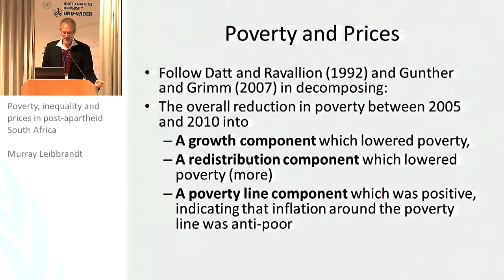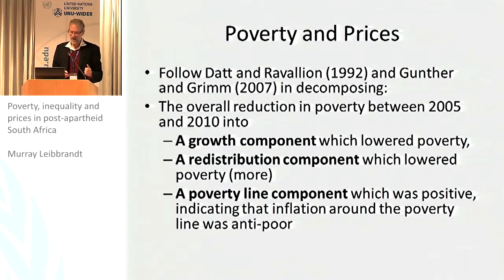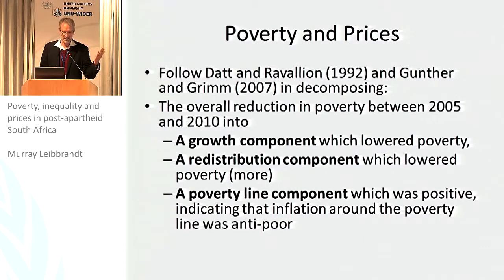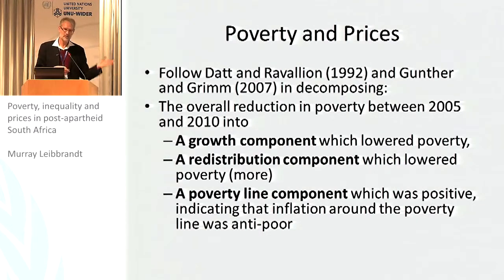We follow a cluster of papers. The Datt-Ravallion decomposition of poverty into growth and redistribution effects has been extended by Gunther and Grimm — and Grimm is here if you have questions about the technique — to also decompose poverty changes into a growth effect, a redistribution effect, and a price effect. What do we find? Growth was positive and did lower poverty. There was also a redistribution component that lowered poverty — quite strongly. But the poverty line component, the value added of the Gunther-Grimm approach, was positive in the wrong direction: it increased poverty. So the price changes were anti-poor — they dampened the impact of the improvements.